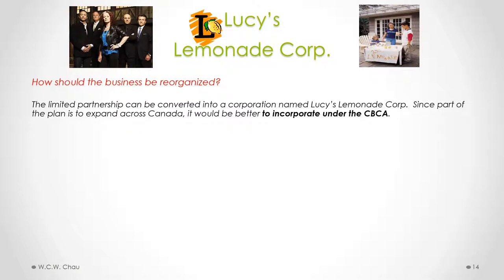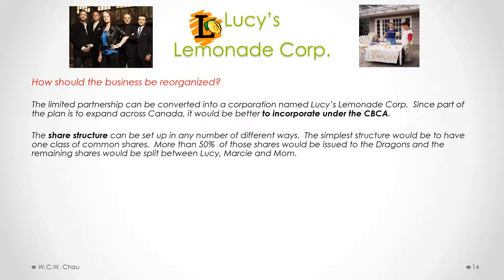The first step is to convert the limited partnership into a corporation named Lucy's Lemonade Corp. Given that part of the plan is to expand across Canada, it would make better sense to incorporate under the CBCA instead of the OBCA — if done under the OBCA, we would need to take the extra step of obtaining extra-provincial licenses in each province outside of Ontario. Now we need to decide on the appropriate share structure. The simplest structure would be to have one class of common shares, with more than 50% of those shares issued to the Dragons and the remaining shares split between Lucy, Marcy, and Mom.